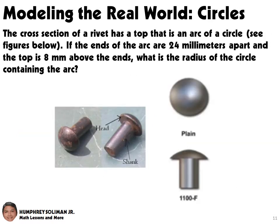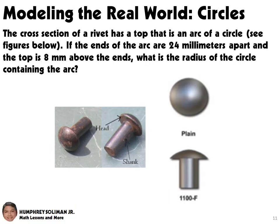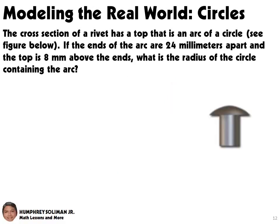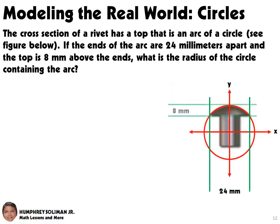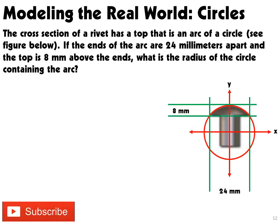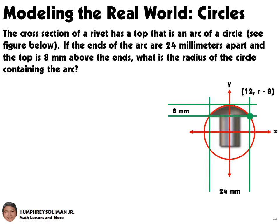Let's have another example. The cross section of a rivet has a top that is an arc of a circle — see figures below. If the ends of the arc are 24 mm apart and the top is 8 mm above the ends, what is the radius of the circle containing the arc? In solving this problem, we can use the x and y axes and put the center of the circle at the origin. Then we can use the coordinates of the circular arc in the standard form of equation of a circle to find the radius.